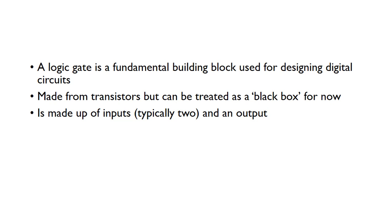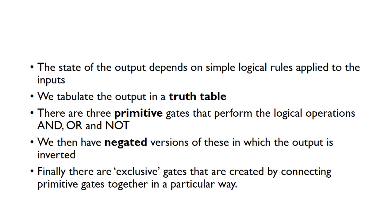A logic gate is a fundamental building block used for designing digital circuits. The logic gate is made from transistors, but for now we're just going to treat it as a black box. The logic gate has some inputs, normally two, and an output. The state of the output depends on simple logical rules that apply to the inputs, and we can tabulate the outputs in a truth table for different inputs. The three primitive gates perform the logical operations AND, OR, and NOT. We can also have negated versions of these where the output is inverted, and finally there are exclusive gates created by connecting primitive gates together in a particular way.